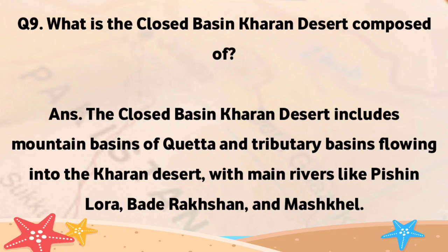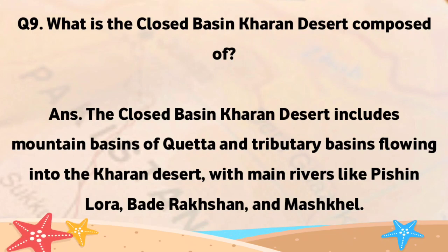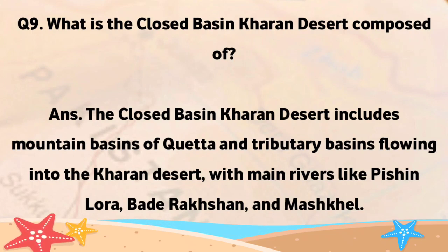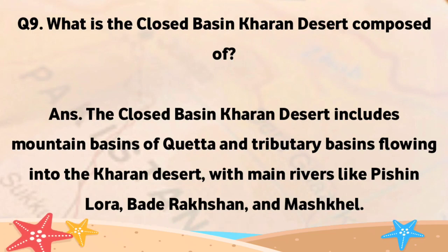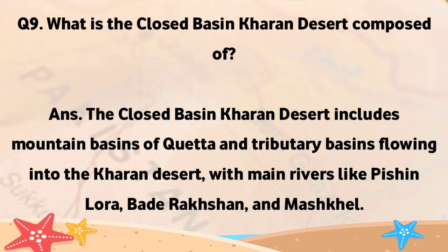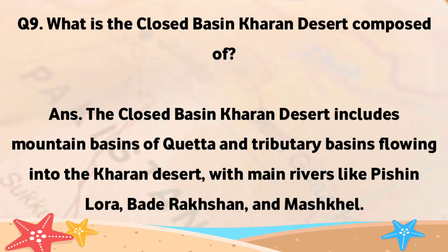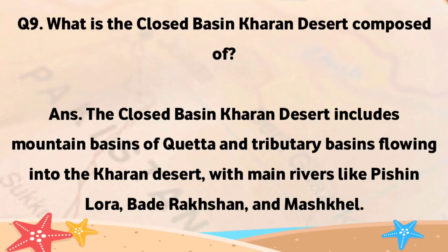What is the Closed Basin Karan Desert composed of? The Closed Basin Karan Desert includes mountain basins of Keta and tributary basins flowing into the Karan Desert, with main rivers like Pishin Lora, Bade Rikshan, and Mashkul.